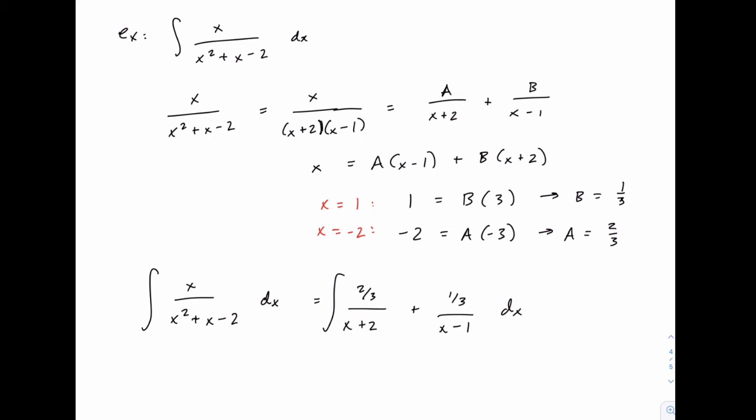So the first term, for instance, would be 2 thirds times the natural log of u, and since u is x plus 2 there, we get 2 thirds times the natural log of x plus 2. Don't forget the absolute value signs, we talked about those when we covered u substitution earlier in the semester. And then the second term would become 1 third natural log of x minus 1, plus c of course.